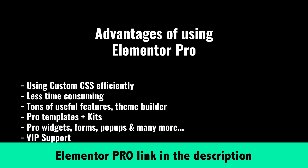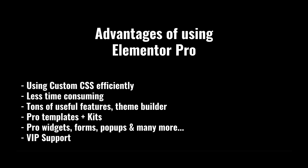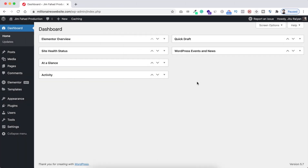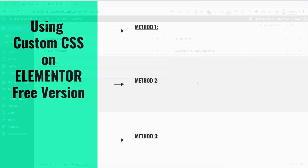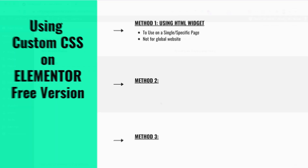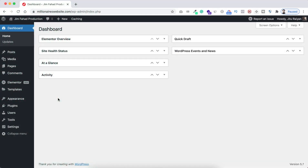In this tutorial I'll show you how to use custom CSS on Elementor free version, and I'll show you three different methods for that. Let's start with method number one — you should use this method if you only want to change custom CSS for a single page, not for the whole website.